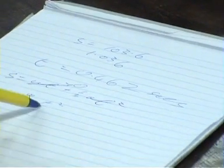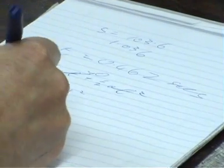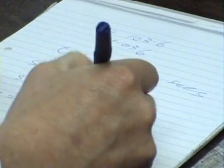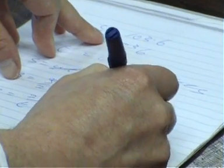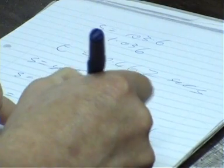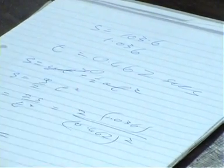So if I have a value for s and I have a value for t, I should be able to get a value for g. So cross multiplying, g is going to be 2s divided by t². So it's 2 times 1.036 divided by my time, which is 0.462 all squared.